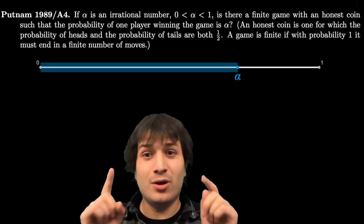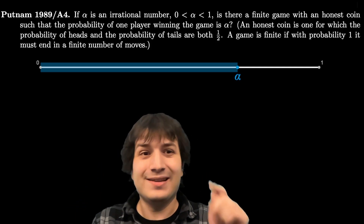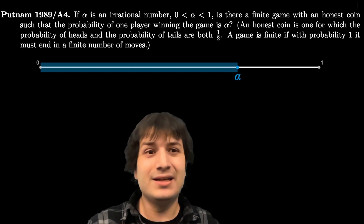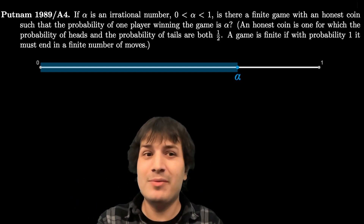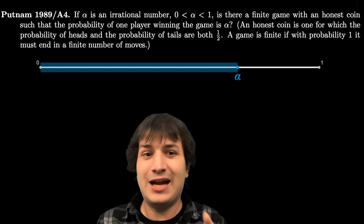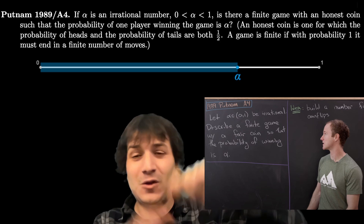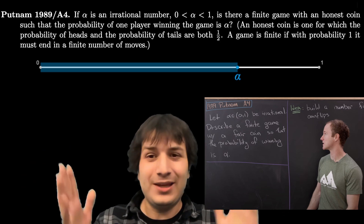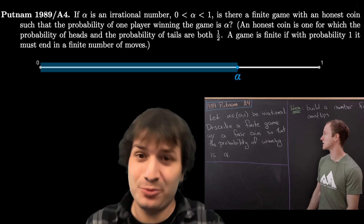Today's probability problem comes originally from the 1989 Putnam exam: let alpha in (0,1) be an irrational number. Describe a finite game with a fair coin so that the probability of winning is alpha. I saw this problem for the first time on Michael Penn's excellent channel, where he did a full blackboard solution using chalk. This video is a picture proof of the solution.